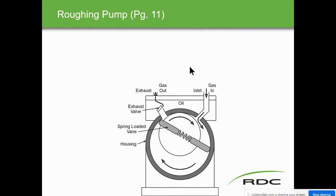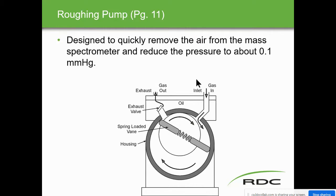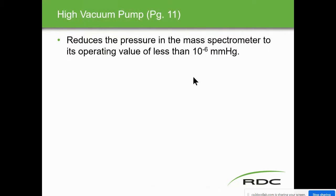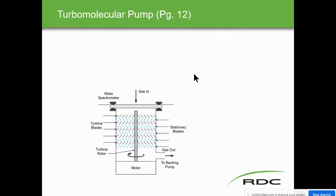On page ten, the high vacuum systems: the roughing pump starts first and takes pressure down to 0.1 millimeters of mercury. Because of the magnetic field and time-of-flight analyzers, we don't want any air in there — we don't want molecules bouncing off air. The high vacuum pump then removes the remaining traces of gas. These pumps maintain pressure less than 10⁻⁶ millimeters of mercury in the analyzer and detector, preventing contamination of air molecules mixing with the sample molecules.